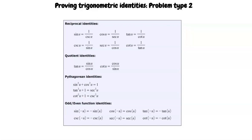This is an example video for Proving Trigonometric Identities Problem Type 2. First, recall that the purpose of proving trigonometric identities is to show that the original equation is true. So, in order to do this, we must transform the equation using trigonometric identities and algebra.